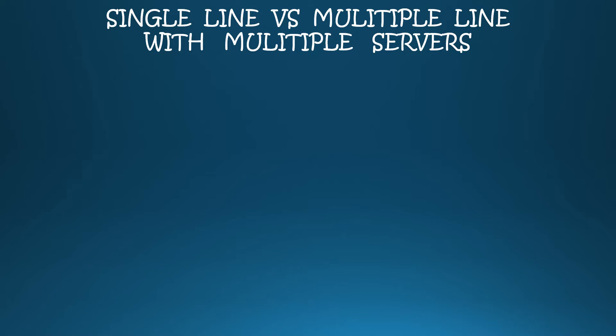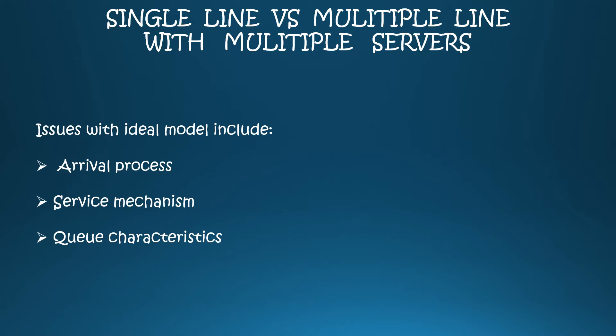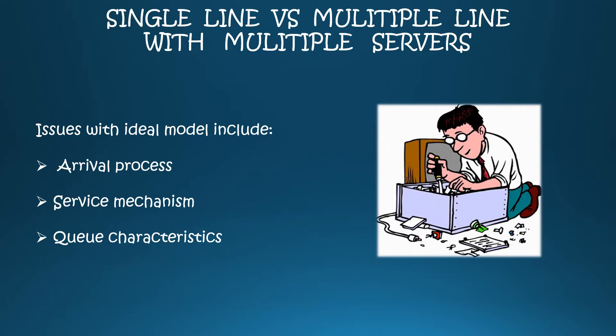Despite the different variations of models, all of them have three aspects that may cause an issue with the ideal model: the arrival process, the service mechanism, and the queue characteristics. If one of these aspects does not operate as intended, the queuing model fails and customers become dissatisfied due to an inefficient process. To maximize business efficiency and achieve customer satisfaction, the organization must choose the queuing model that works best for them.